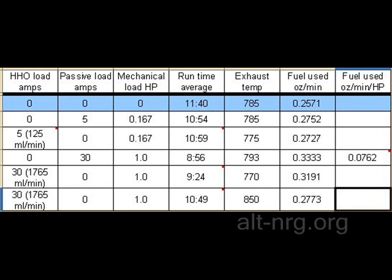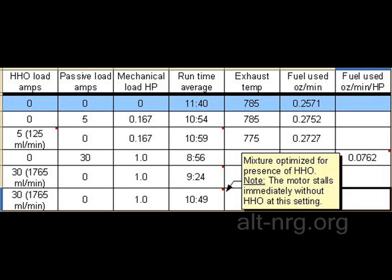On the last line, we have the same 30-amp load, or one mechanical horsepower, being applied to the engine. All of the HHO is re-injected, but this time the mixture is optimized for the presence of HHO. I'd also like to note that the motor stalls immediately without HHO being re-injected at this mixture setting. In this instance, the run time elevated to 10 minutes and 49 seconds. That means we got back 69% of the lost run time by reintroducing the HHO and optimizing the mixture, despite having only a 34% total power conversion efficiency from the output shaft to the creation of HHO. That's double the amount of return on our investment.